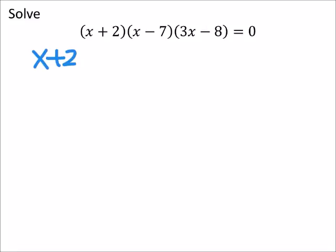So let's start with x plus 2. We need this to equal zero. So that gives us x equals negative 2 by subtracting 2 from both sides.